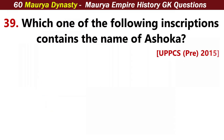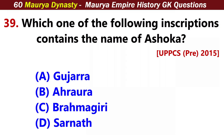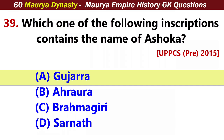Which one of the following inscriptions contains the name of Ashoka? Answer A: Gujarat.